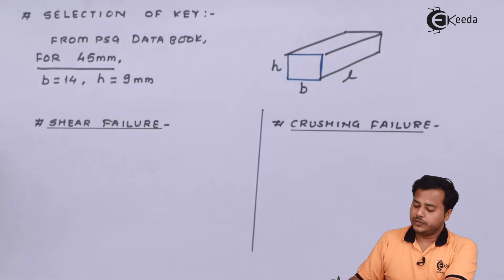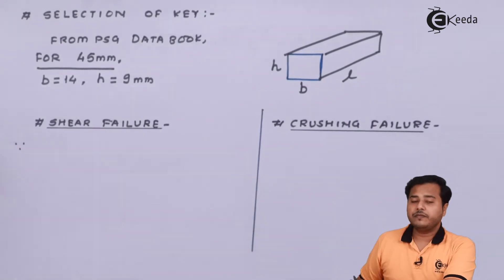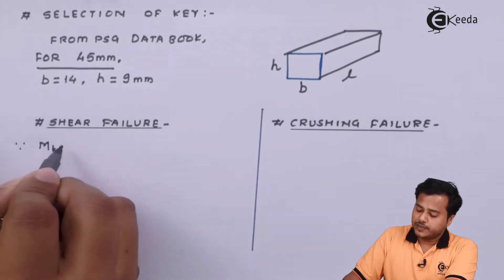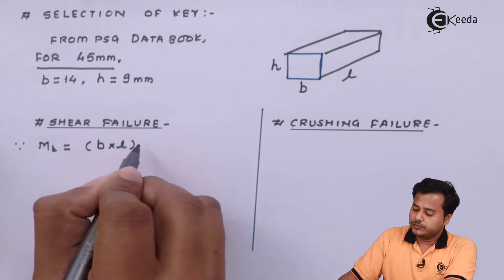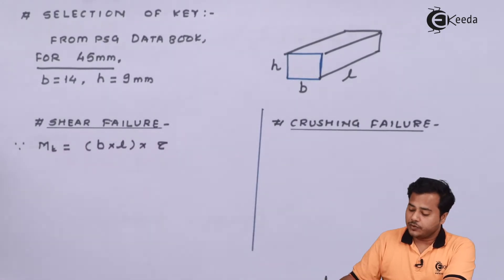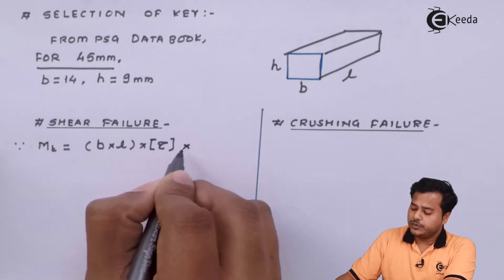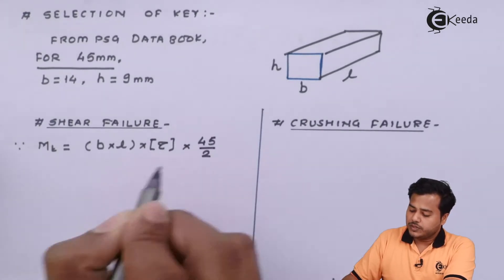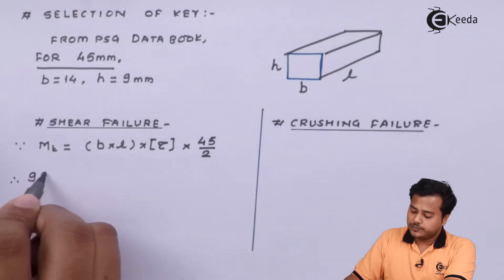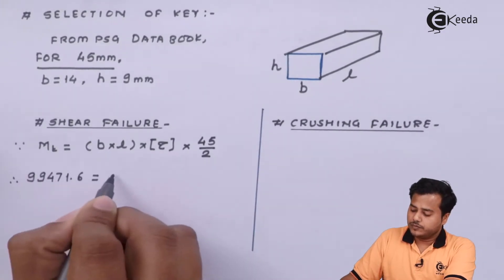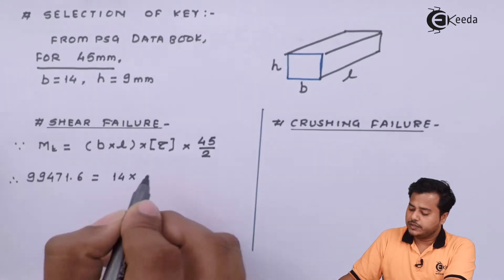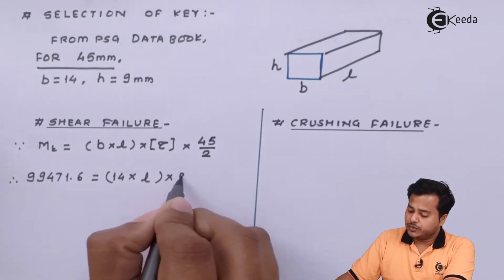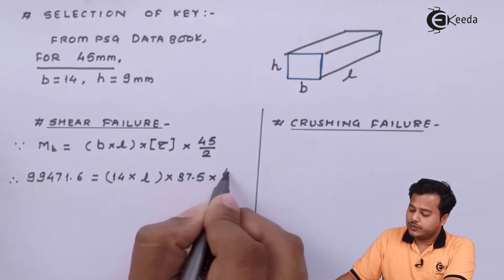We need to figure out the length. The key may fail under shear or under crushing. For shear: MT = τ_allowable × L × B × (d/2). Substituting values: 99471.6 = 37.5 × L × 14 × (45/2). We will solve for the length of the key.